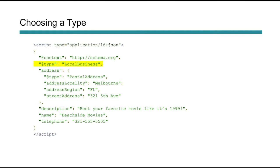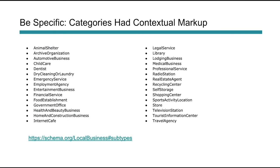When you go to schema.org/LocalBusiness and look at the hashtag subtypes, you'll see these different subtypes. There are 30 of them right now, and some have more information than others. What's really cool is you can start to pull out different information. For instance, if you're in child care, there are parts of your structured data that you could mark up very specific to what you do — same with real estate, a shop, a store, or a shopping center. Again, this is very important because it helps give you more targeted information.